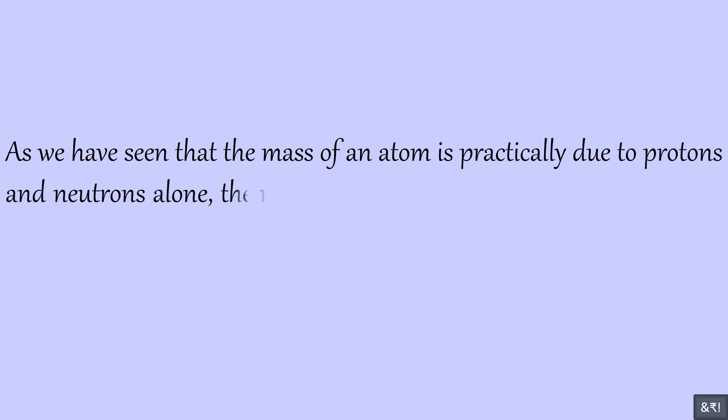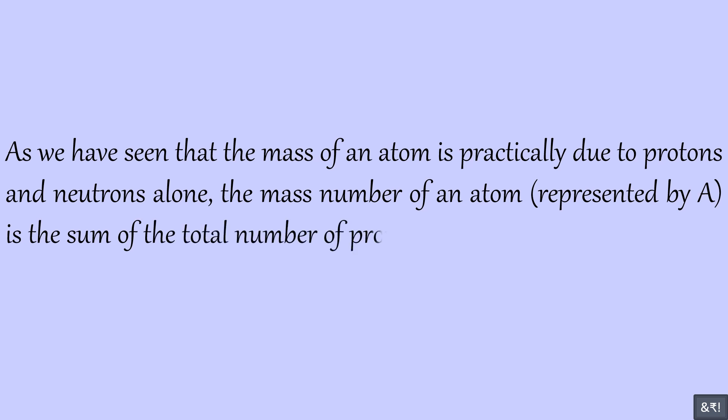As we have seen that the mass of an atom is practically due to protons and neutrons alone, the mass number of an atom, represented by A, is the sum of the total number of protons and neutrons present in the nucleus of an atom.